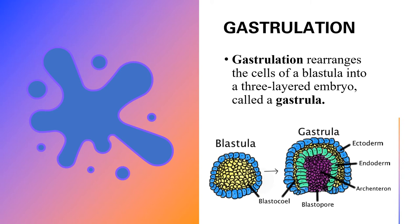In gastrulation, it rearranges the cells of a blastula into a three-layered embryo called a gastrula. Coming from a blastula, which has a blastocel, there would always be movements of cells, and then it would eventually form the different germ layers, including the ectoderm, the endoderm, and then the mesoderm, eventually coming from the blastocel cells. Then a blastopore forms, and you will see an archenteron.